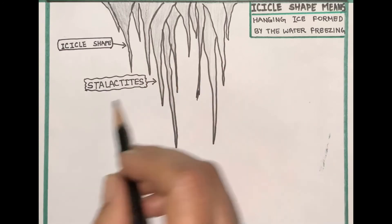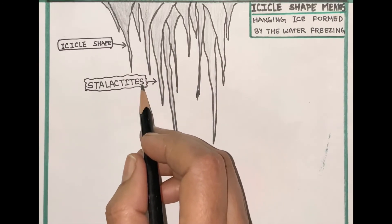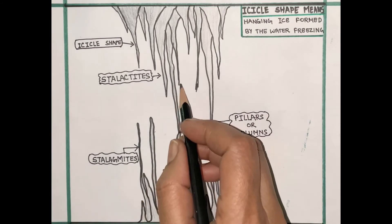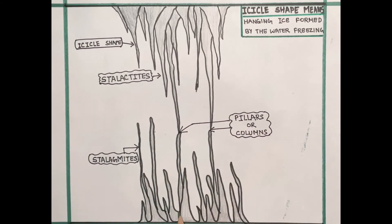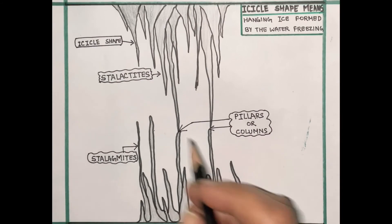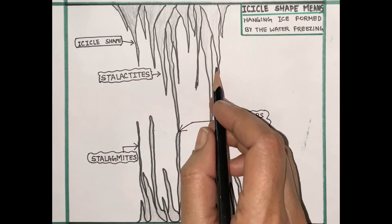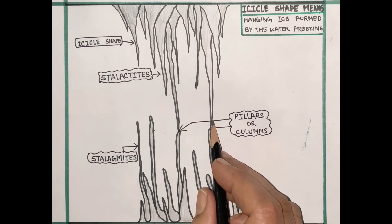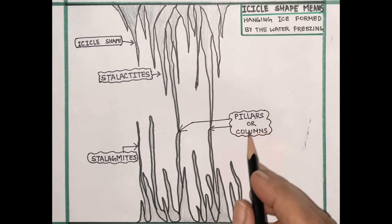The water drips from the tips of the stalactites onto the floors of the caves, leaving deposits of calcite there as well. Over time, stalagmites are formed. Sometimes stalactites and stalagmites join together to form pillars or columns.